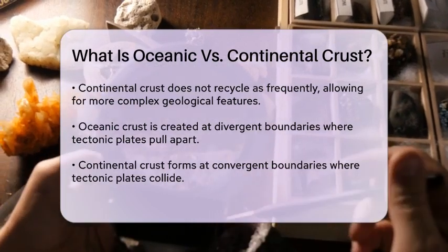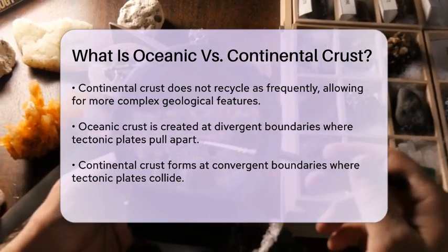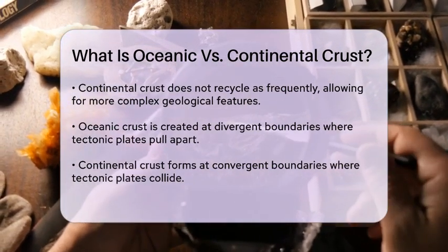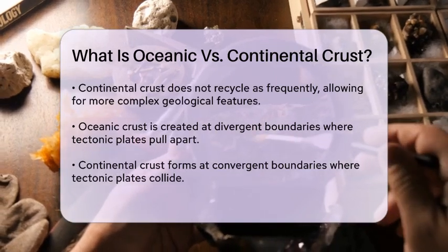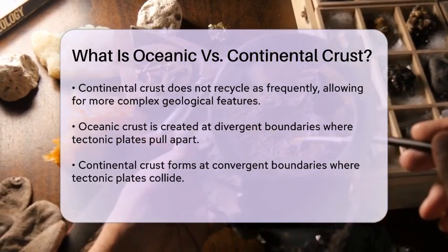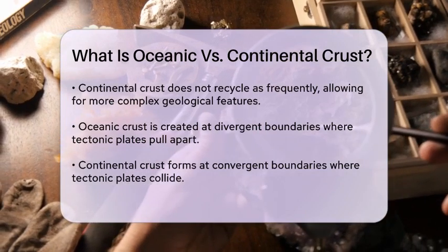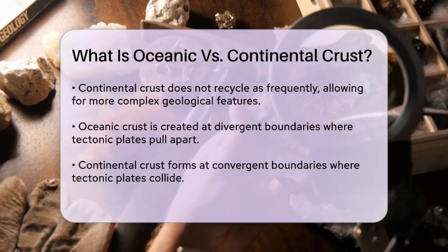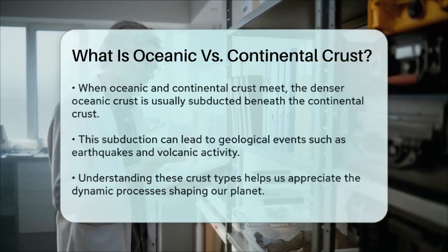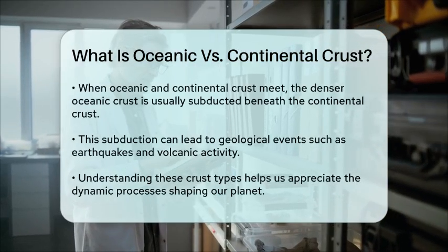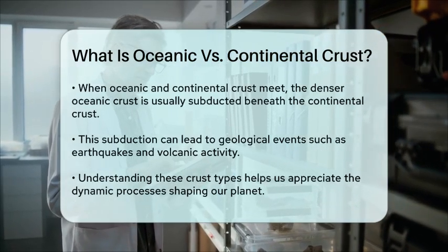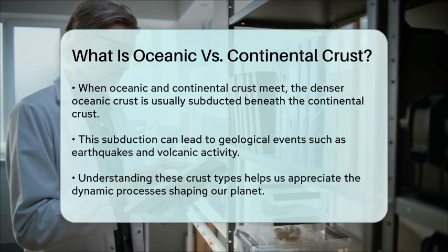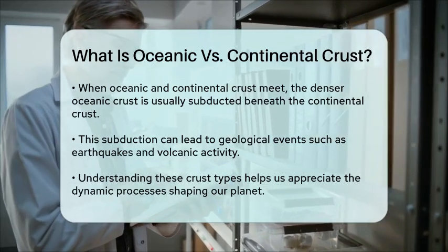The differences between Oceanic and Continental Crust also extend to their formation and behavior during tectonic activity. Oceanic Crust is created at divergent boundaries, while Continental Crust is often formed at convergent boundaries, where tectonic plates collide. When these two types of crust meet, Oceanic Crust is usually subducted beneath Continental Crust due to its higher density, leading to geological phenomena such as earthquakes and volcanic activity.